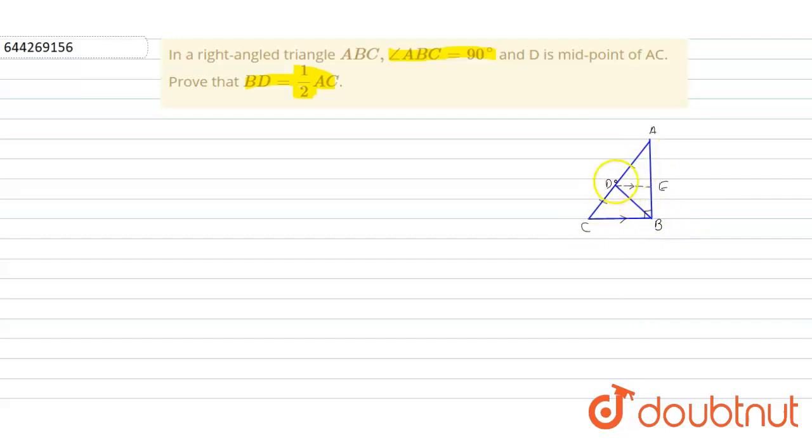D is the midpoint of AC. As when I have drawn DE parallel to CB, we can say DE is parallel to CB and AB is transversal.